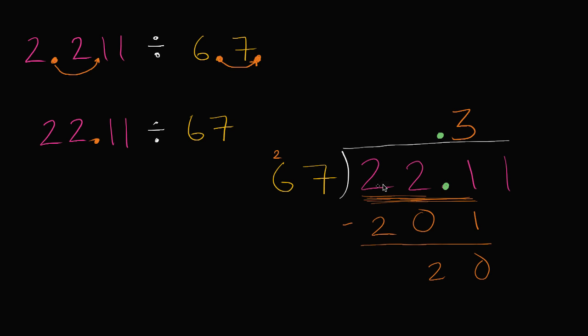So 3 was right. If 3 times 67 were higher than 221, then we'd be in trouble. And then if 3 times 67 were lower, but it was so low that when you subtracted you got a number higher than 67, then that means you could have thrown in more 67s in there. But this number is just right. It's lower, but our remainder is less than 67. So let's keep going.